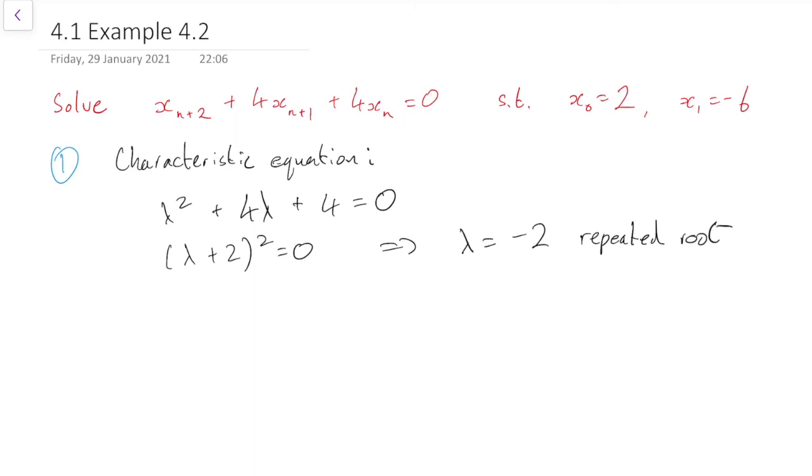So remember that there's a special rule that we have to follow when we have a repeated root, which is that the general solution is x_n equals (A plus Bn) times (-2)^n. That's the rule for if we have a repeated root, which you will have read earlier on.